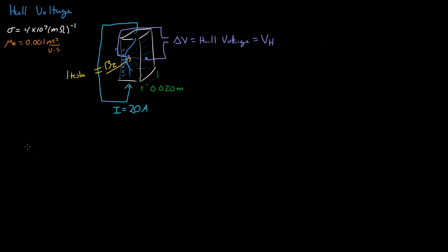Well, let's just start looking at equations. One equation we know is that the Hall Voltage is equal to RH — the Hall coefficient — multiplied by the current I, multiplied by the strength of the magnetic field perpendicular to the flow of electrons, BZ, and then divided by the width, which is 0.02 meters. That must be in meters, not millimeters. So what we need to do is solve for RH.